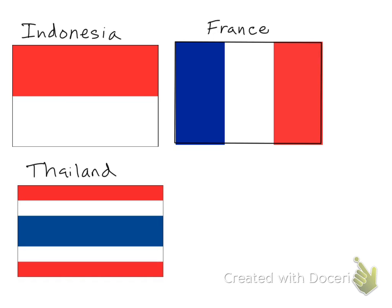We'll use flags of different countries to help us learn about these lines of symmetry. Each country in the world has a different flag. The colors and designs on a country's flag usually have special meaning. Here I have the flags of Indonesia, France, and Thailand.